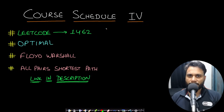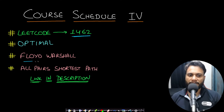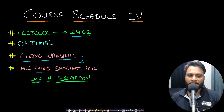Hello guys, welcome back to Tech Dose. In this video we will look at the Course Schedule 4 problem, which is LeetCode number 1462. A prerequisite before watching this is to watch my video on Floyd-Warshall showing how to find all pairs shortest path, so the link will be in the description below.